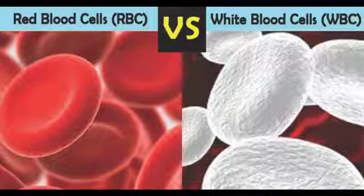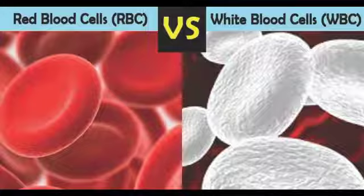Next are platelets. These are small, non-nucleated cellular fragments of various shapes, commonly called thrombocytes. They appear round or oval, biconvex, disc-shaped, or irregular in outline. Platelets are fragments of major cells found in bone marrow. Their main function is blood coagulation. The average lifespan of blood platelets is 5 to 9 days. A decrease in the number of platelets is called thrombocytopenia.